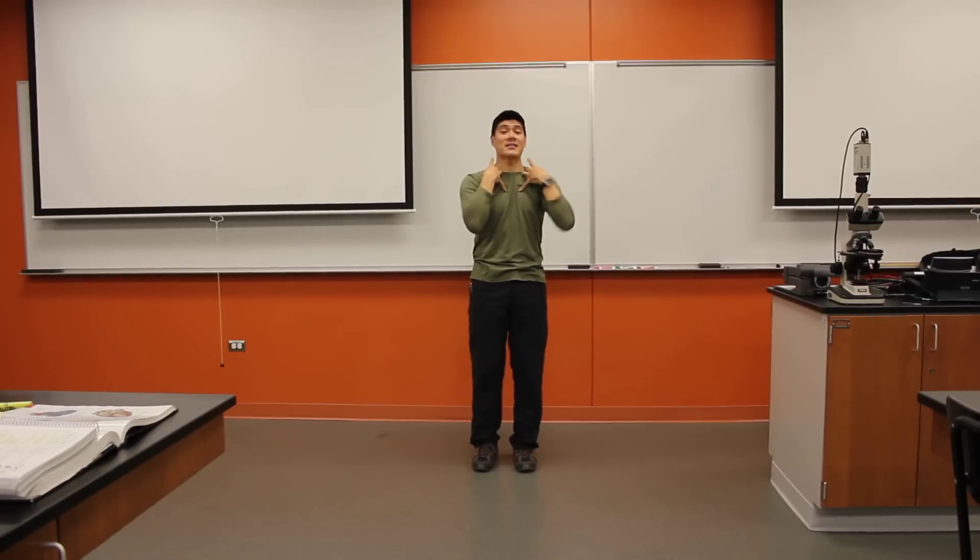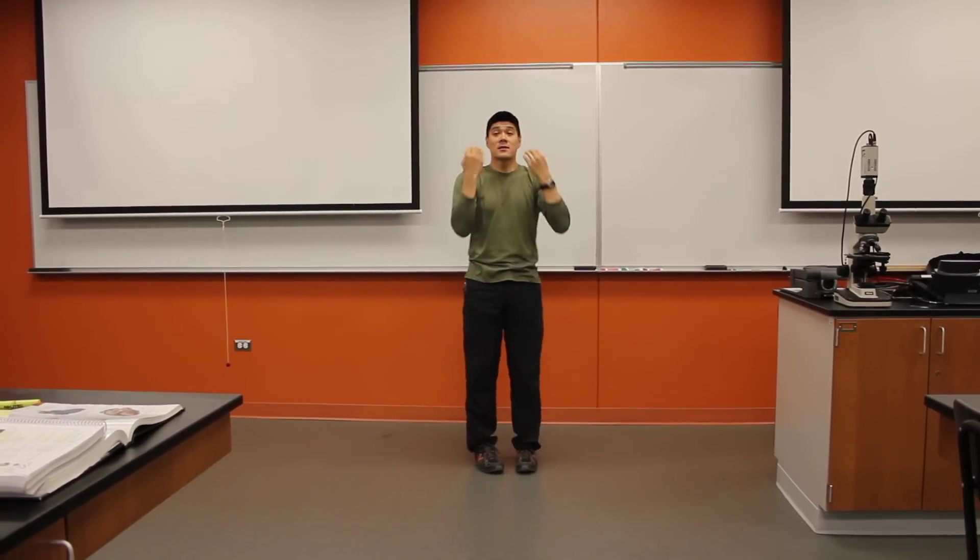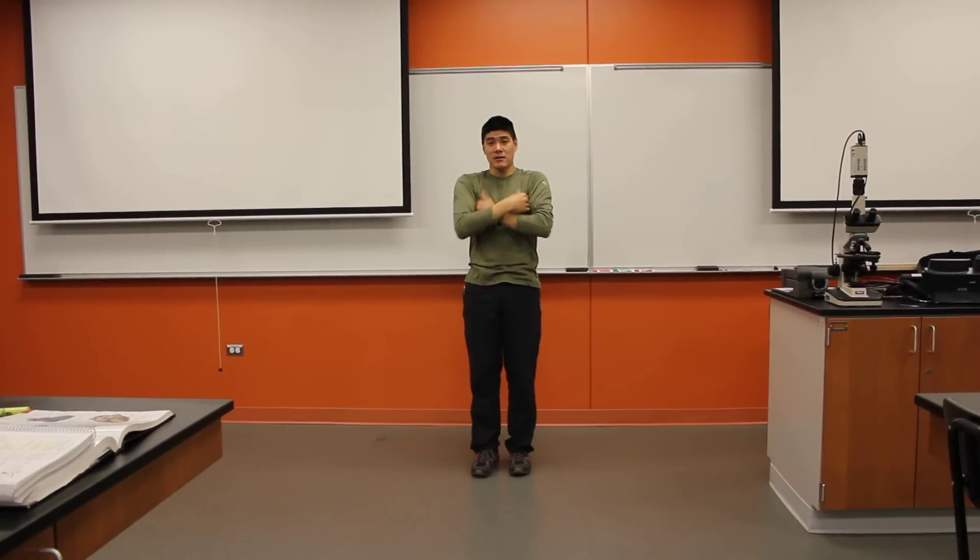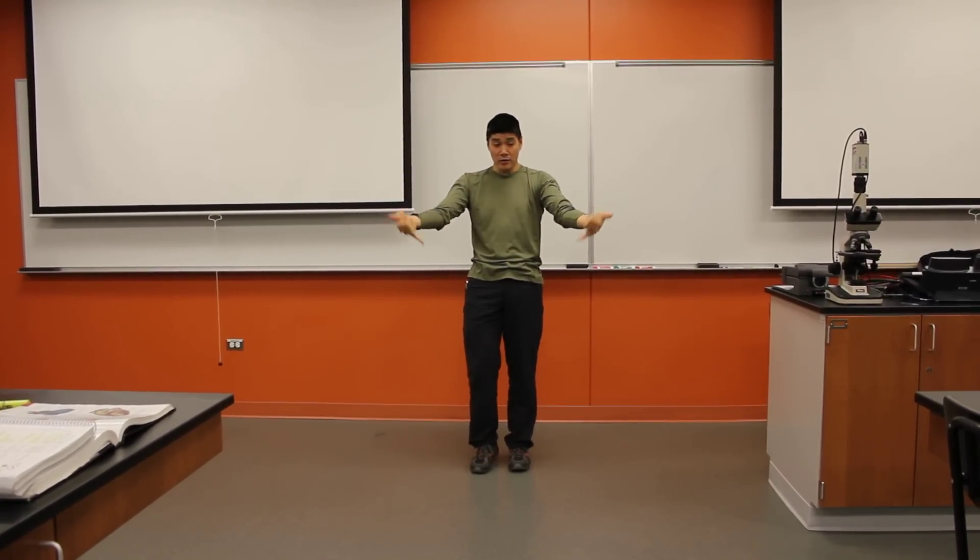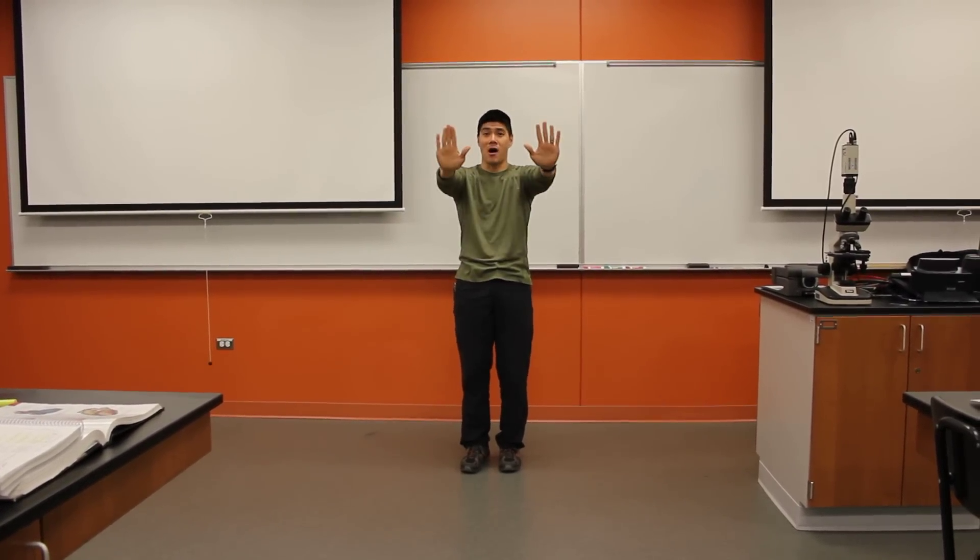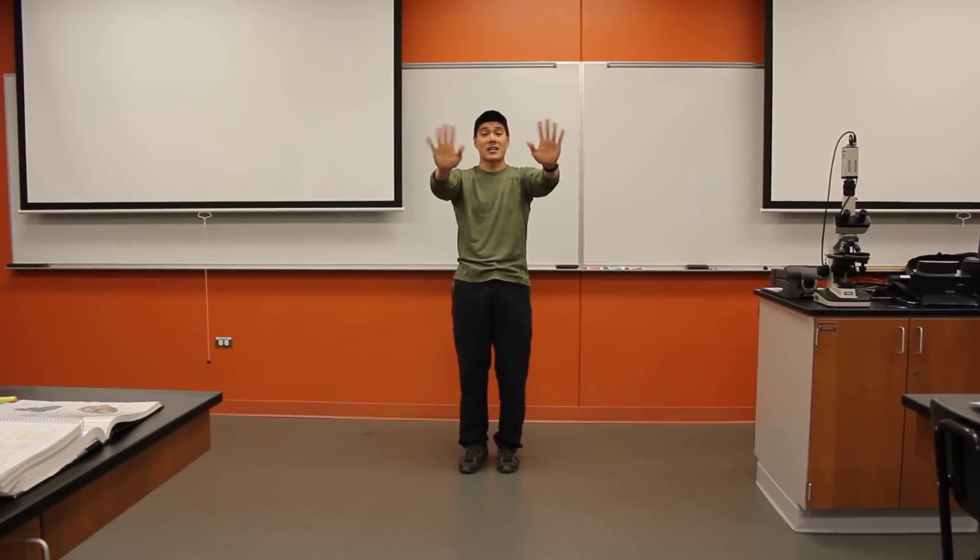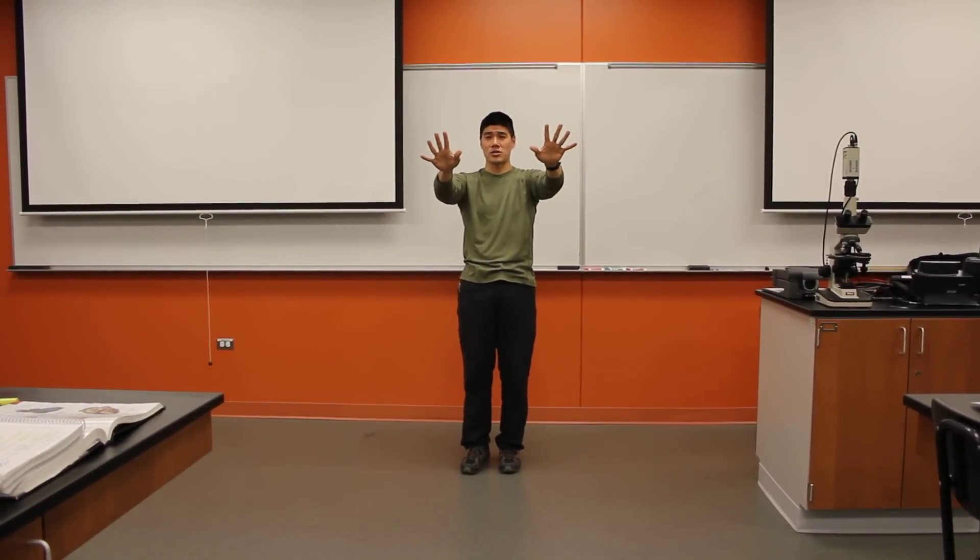Subclavian to the internal thoracic and the vertebral artery. Subclavian to the axillary, to the brachial, to the radial and ulnar, to the deep and superficial palmar arches, that give off the common and then the proper digital arteries.